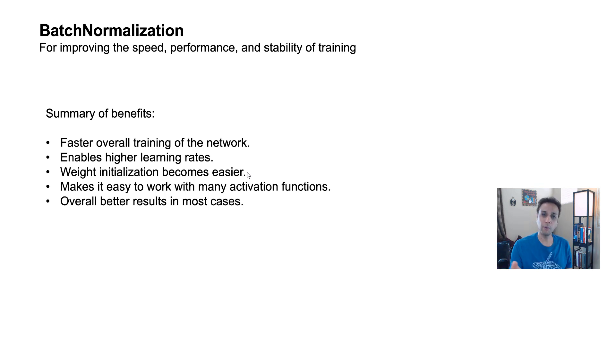For example, when you define your model, sometimes we initialize weights by using HE_uniform. I'll show you in a second. I have a few lines of code. And it makes it easy to work with many activation functions. When you do batch normalization, different activation functions, sigmoid has a range of 0 to 1 in Y, for example. ReLU can actually go almost to infinity. By normalizing with batch normalization, you can switch between these activation functions depending on your application, and it makes it a bit easier. And overall, better results in most cases.